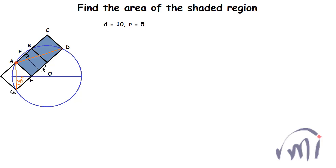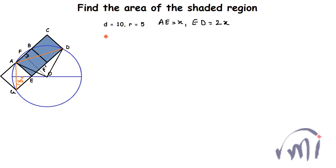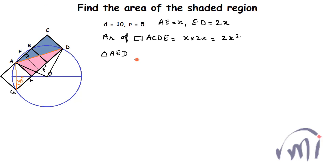Since this inscribed angle is 45 degrees, chord AD subtends an angle of 90 degrees at the center of the circle, meaning angle AOD is 90 degrees. So AD is the hypotenuse for two right-angle triangles: triangle AED and triangle AOD. If AE equals x, then ED equals 2x, so the area of rectangle ACDE equals x times 2x, or 2x². From triangle AED, AD² equals x² plus (2x)², which equals 5x².